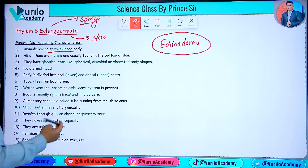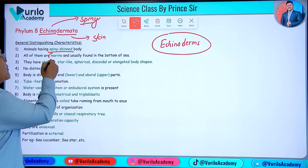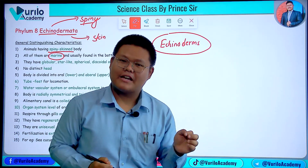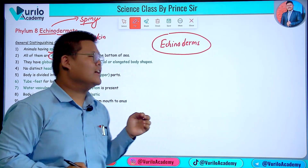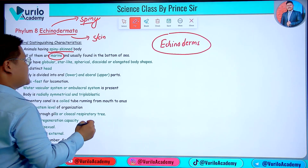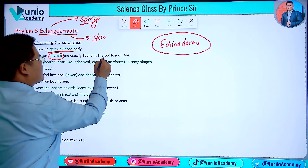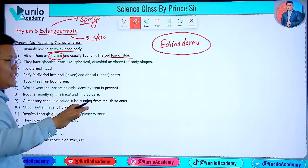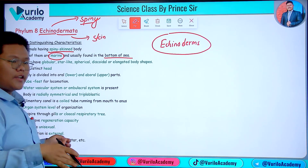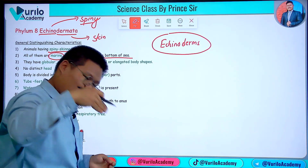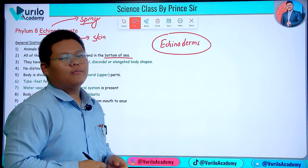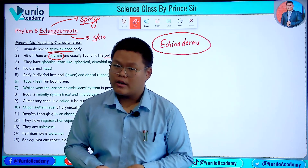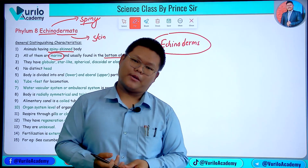All Echinoderms are marine, meaning they live in the sea. They are generally bottom dwellers, living at the bottom of the sea.